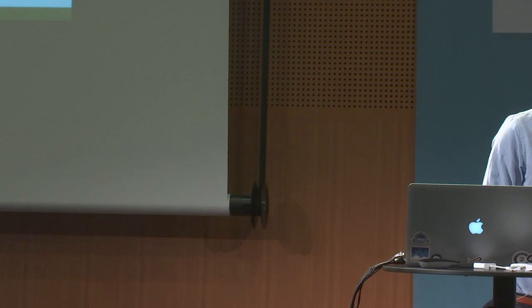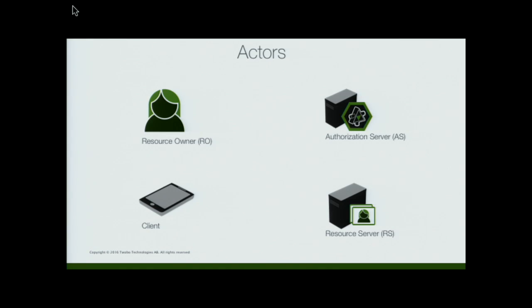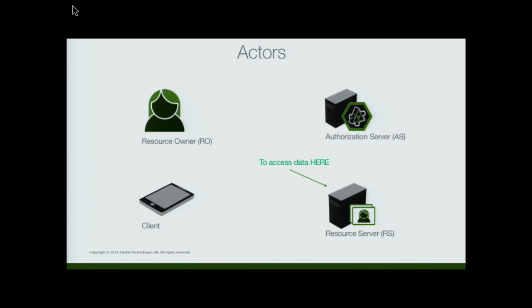OAuth consists of four actors. It is there for the resource owner — you, the user — to access something on the resource server, maybe it's pictures, through an app on the phone, perhaps — the client. And then we have the fourth actor, the authorization server, that helps in this case. So this user wants this app to access data on that resource server. That's what we're trying to do.